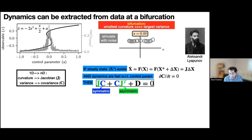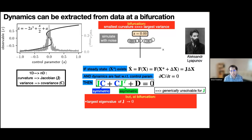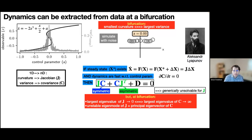In general, this equation isn't easy to solve — we can't directly solve for the Jacobian from the covariance, because the Jacobian has asymmetric gene dependencies while the covariance is symmetric. But at a bifurcation, special things happen: the largest eigenvalue of the Jacobian goes to zero — the same as the curvature becoming flat — which means the largest eigenvalue of the covariance diverges to infinity. The spread in the data is evident along the direction of the largest eigenvector, which must be the same direction as the bifurcation. So the unstable eigenmode of the Jacobian equals, up to a sign change, the principal eigenvector of the covariance — a tremendous amount of information extractable directly from the data.